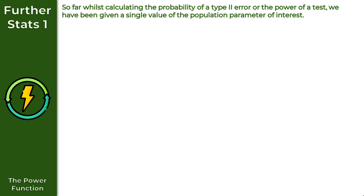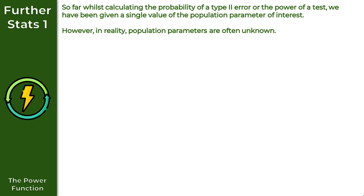In this video, we're going to take a look at the power function. So far, whilst calculating the probability of a type 2 error or the power of a test, we have always been given a single value of the population parameter of interest. The issue here is that in reality, population parameters are often unknown.